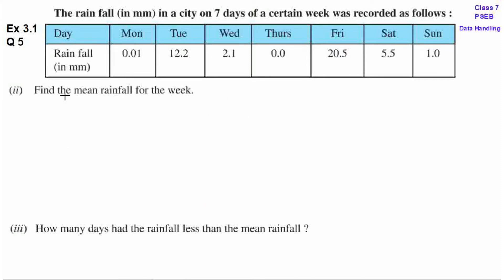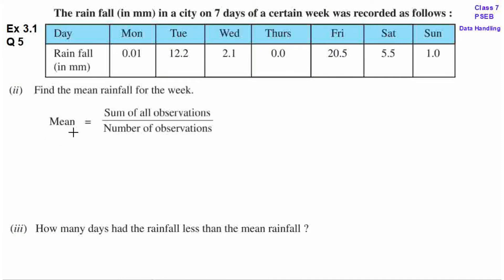Second question है: find the mean rainfall for the week. So, mean का formula क्या होता है? Mean is equal to sum of all observations upon number of observations.